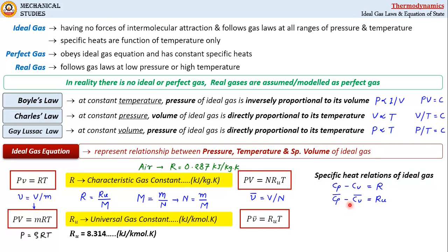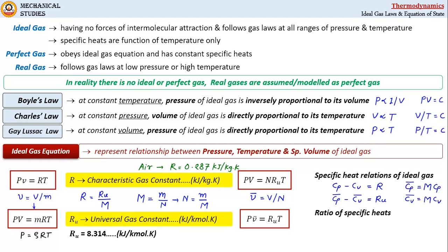The molar specific heats of gas are given by c-bar_p = M·cp and c-bar_v = M·cv. The ratio of specific heats cp and cv is expressed by the letter gamma, so gamma = cp/cv. The value of gamma for monoatomic gases like helium and argon is 1.667.